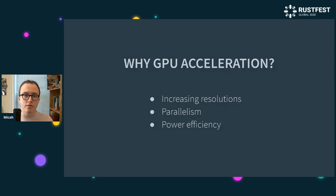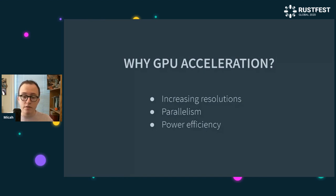I should note that refresh rates are also starting to become an issue, because 120 Hz and 144 Hz monitors are starting to enter the market — so that's even more pixels you have to paint per second. GPUs are really good for highly parallel tasks, and many aspects of 2D rendering happen to be highly parallel since you simply do the same operation per pixel. So it's a good fit for GPUs.